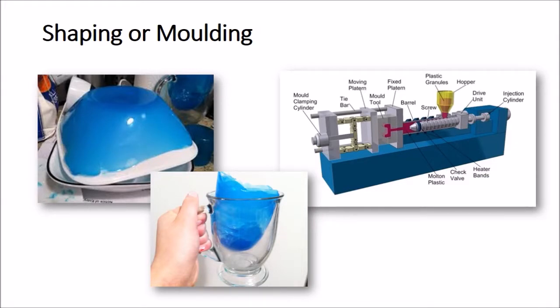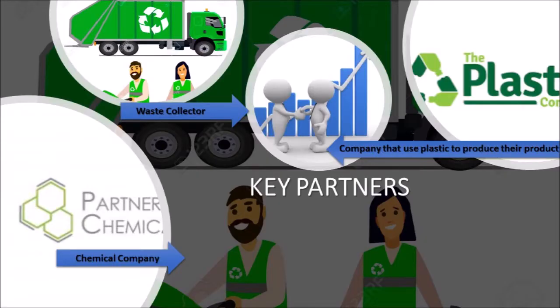The bioplastic can be shaped or molded into various types and sizes according to the customer's requirements. Our key partners for bioplastic production start with the waste collector, who will send us the useful waste to produce bioplastic. The second partner is the chemical company that will supply the chemicals. After production, it will be sold to companies that use plastic to produce their own products. Therefore, we have three key partners: waste collectors, chemical companies, and the companies that will buy our product.